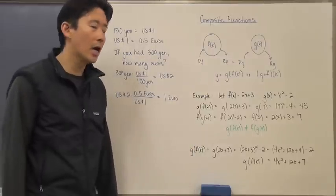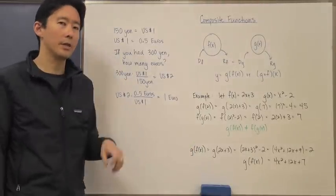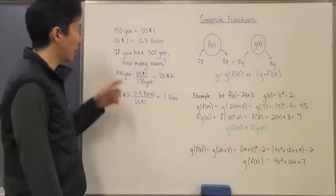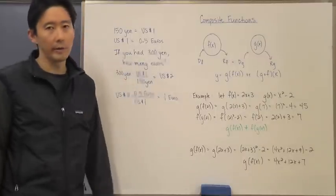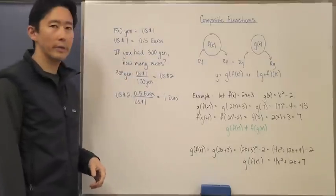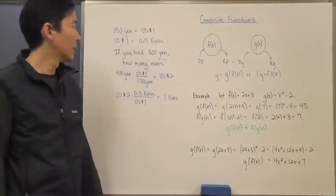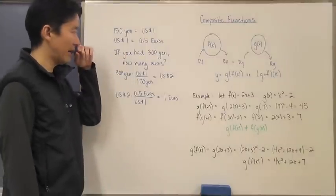Let's say for example we knew that these were the exchange rates for the yen to the dollar and the dollar to the euro. 150 yen was equal to one US dollar, and one US dollar was equal to half a euro. So if you had 300 yen, how many euros would you actually have?